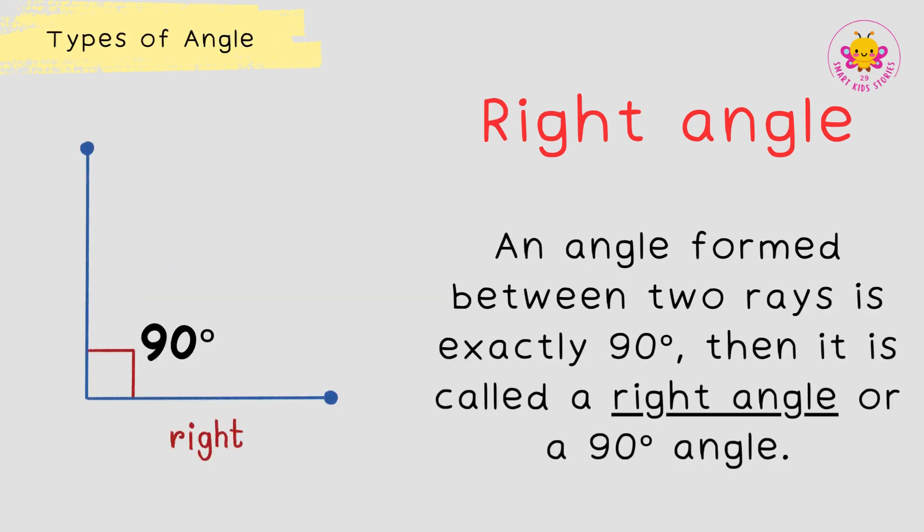Right angle. An angle formed between two rays is exactly 90 degrees. Then it is called a right angle or a 90 degrees angle.